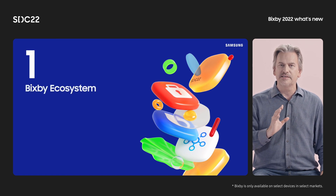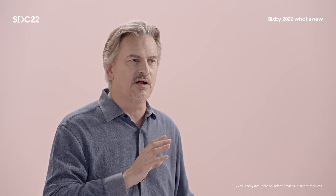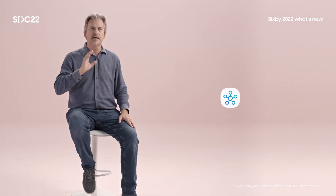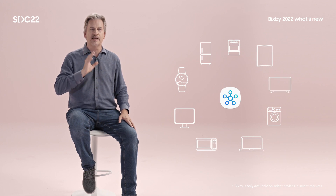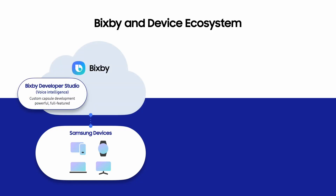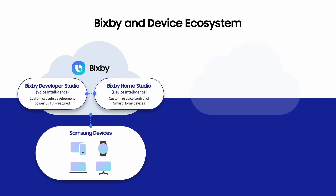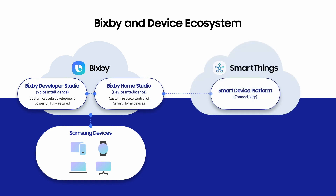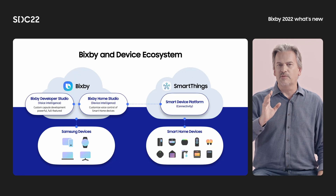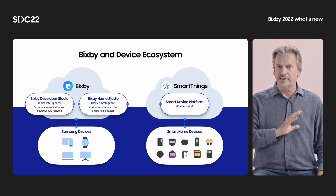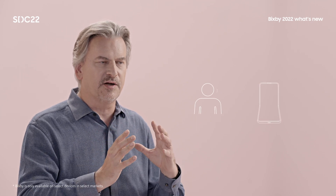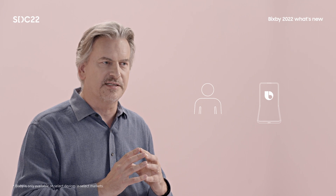Let's review the Bixby and device ecosystem. Samsung Bixby is installed on hundreds of millions of Samsung devices — phones, tablets, TVs, watches, appliances, and more. We have two developer tools for Bixby. First is the Bixby Developer Studio, which lets developers build compelling voice applications, what we call capsules. Second is the Bixby Home Studio, which lets you build compelling voice experiences when communicating with smart devices. All these smart devices are connected through Samsung SmartThings. Any device connected to SmartThings is automatically Bixby voice enabled, and Bixby Home Studio lets a developer enhance that voice experience.